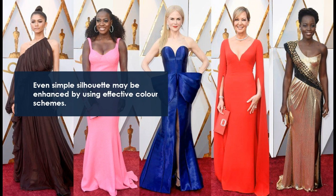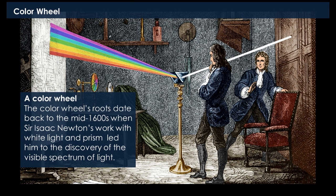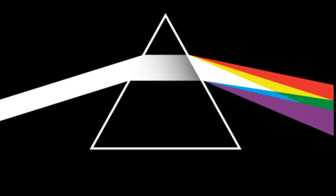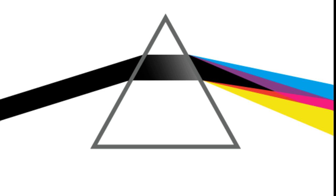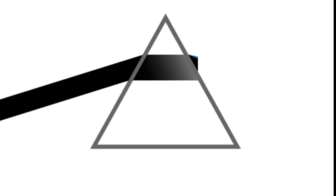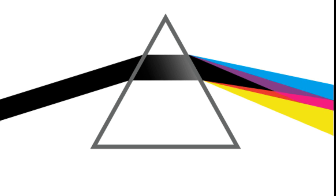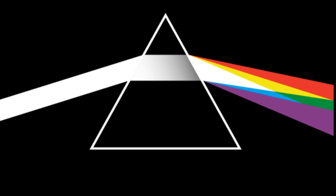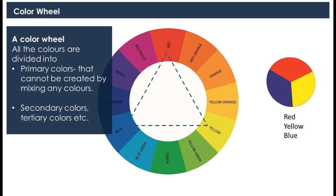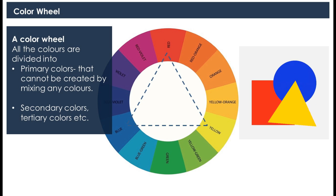Even simple silhouettes may be enhanced by using effective color schemes. Now we will talk about the color wheel. We all know the famous physicist Sir Isaac Newton. In the mid-1600s he was working with a beam of white sunlight, passed it through a prism, and saw the light dispersing into different colors. All these colors are put inside one circle — that is called the color wheel. These colors are divided into primary colors: red, yellow, and blue, which cannot be created by mixing any other colors.